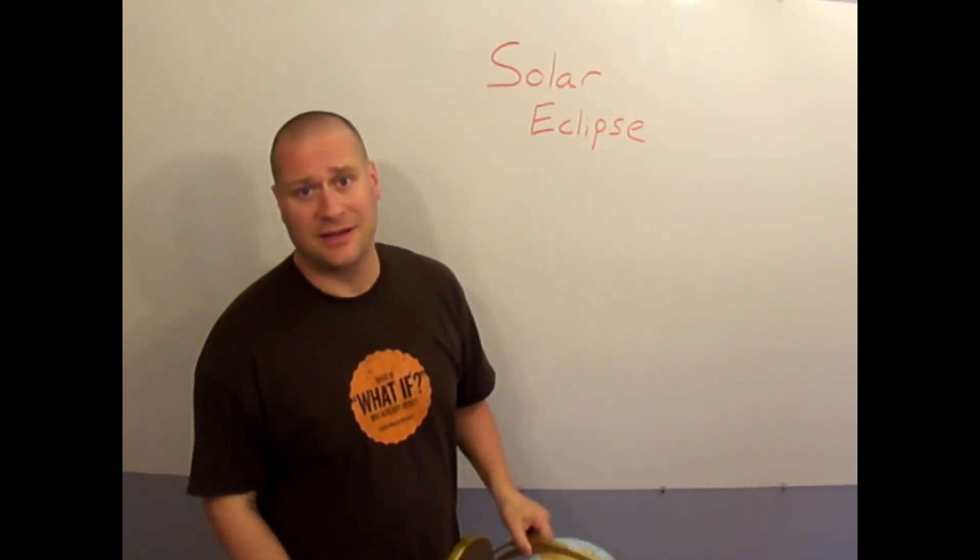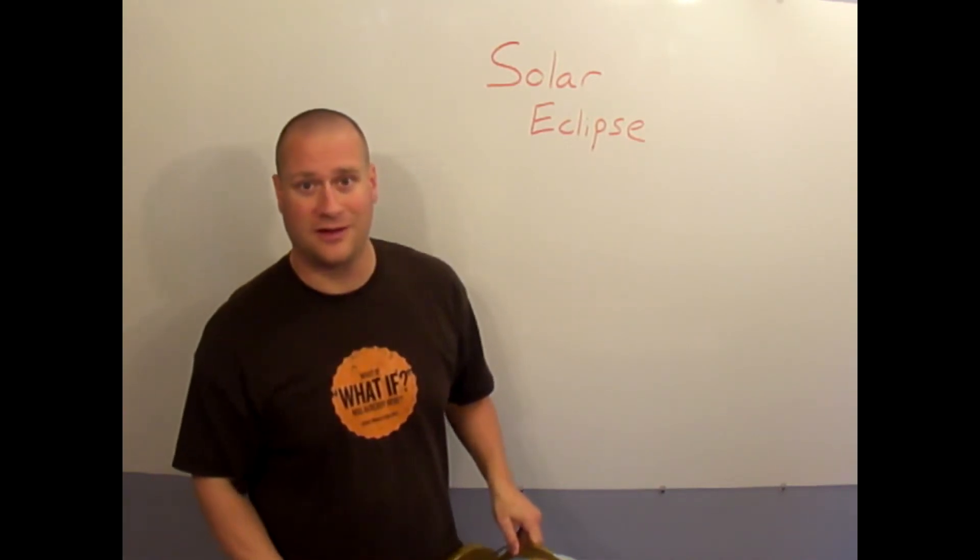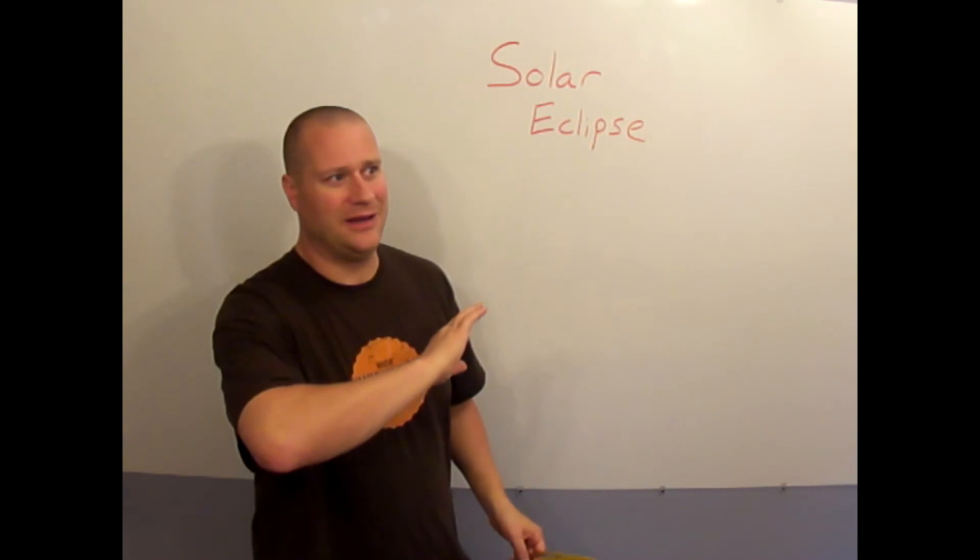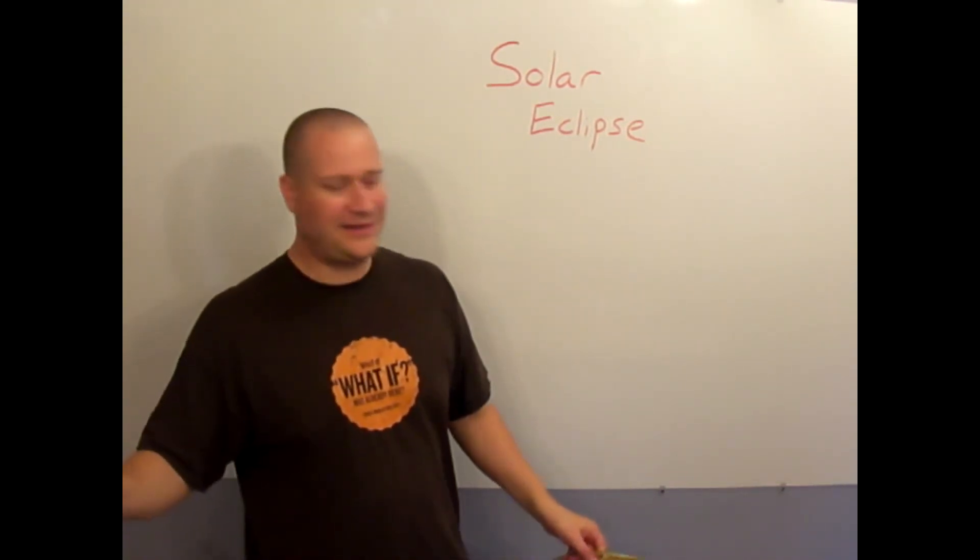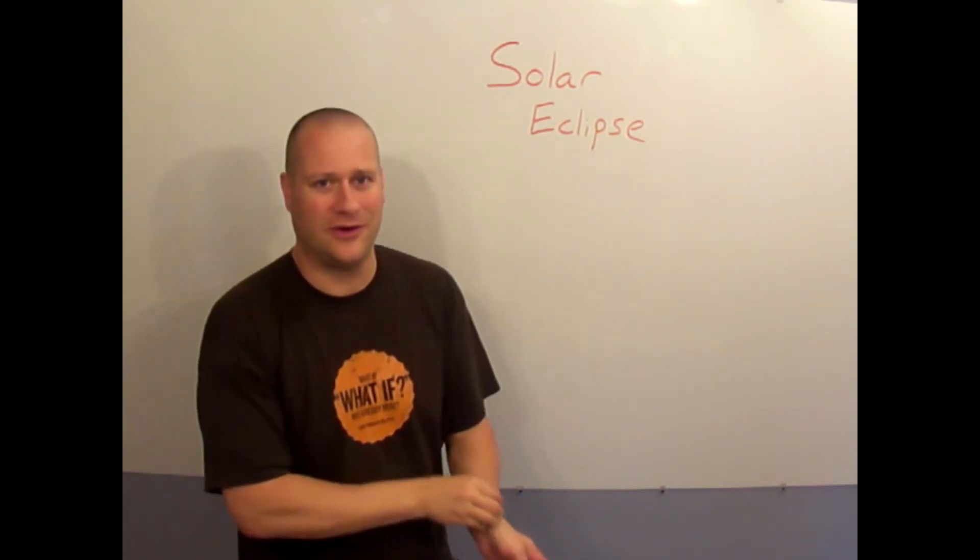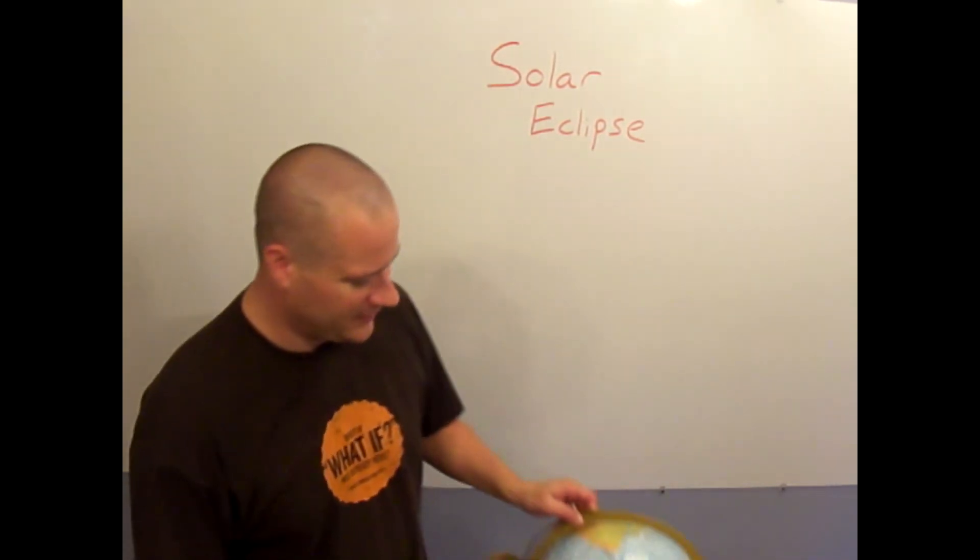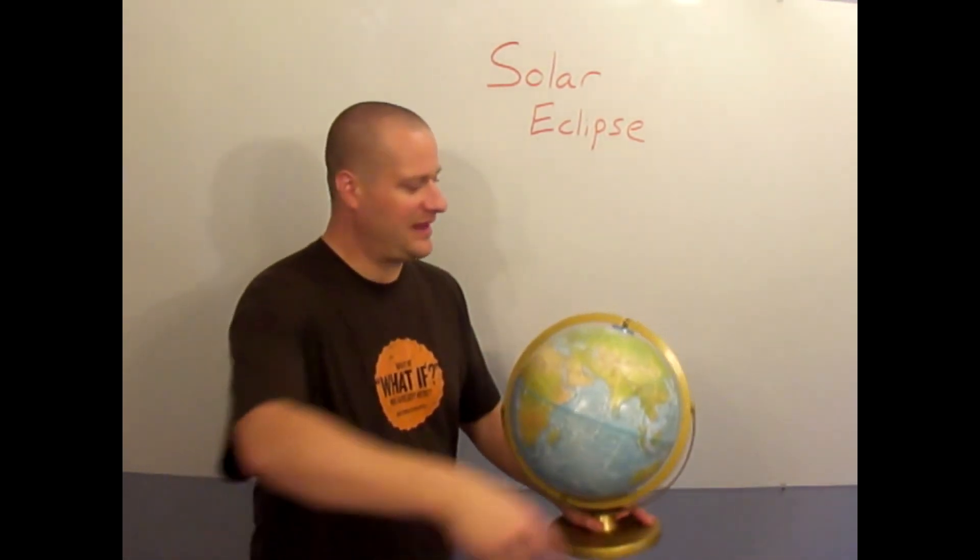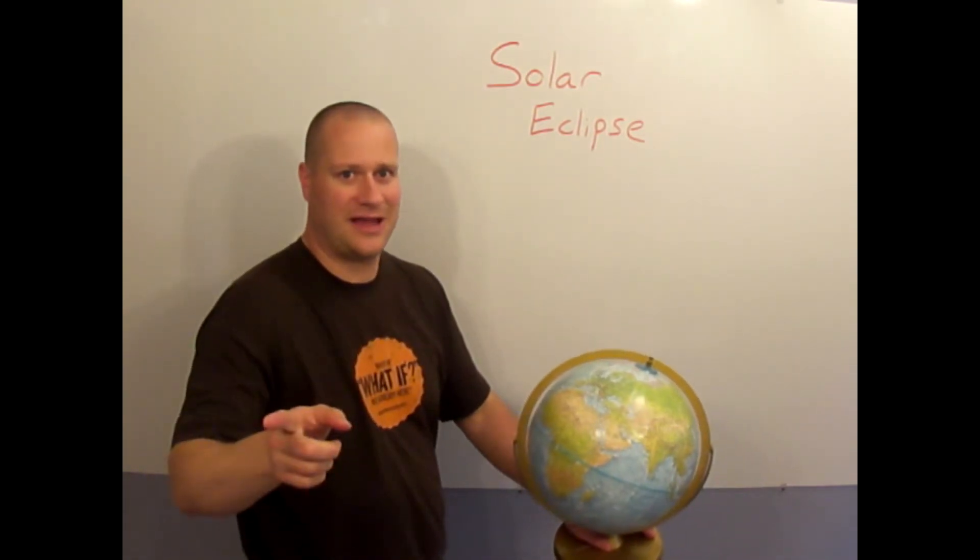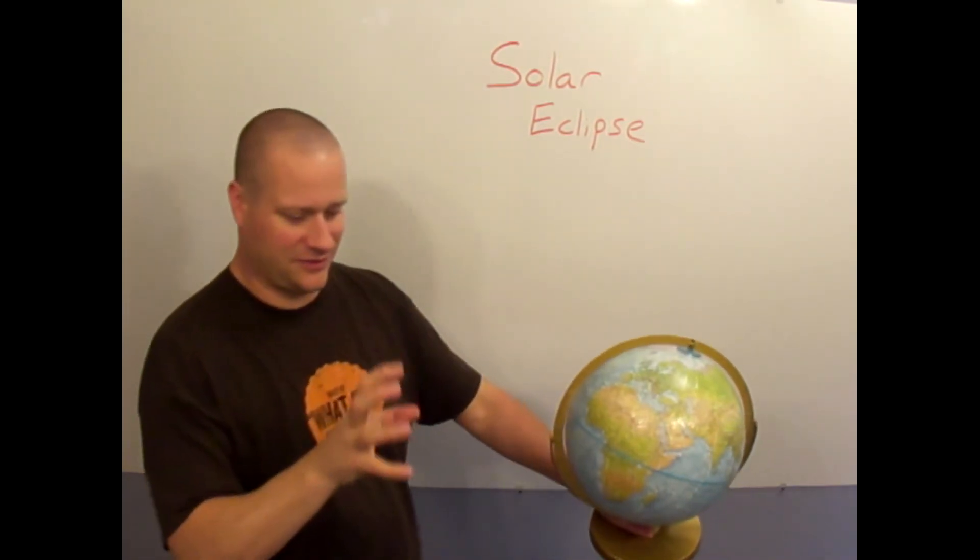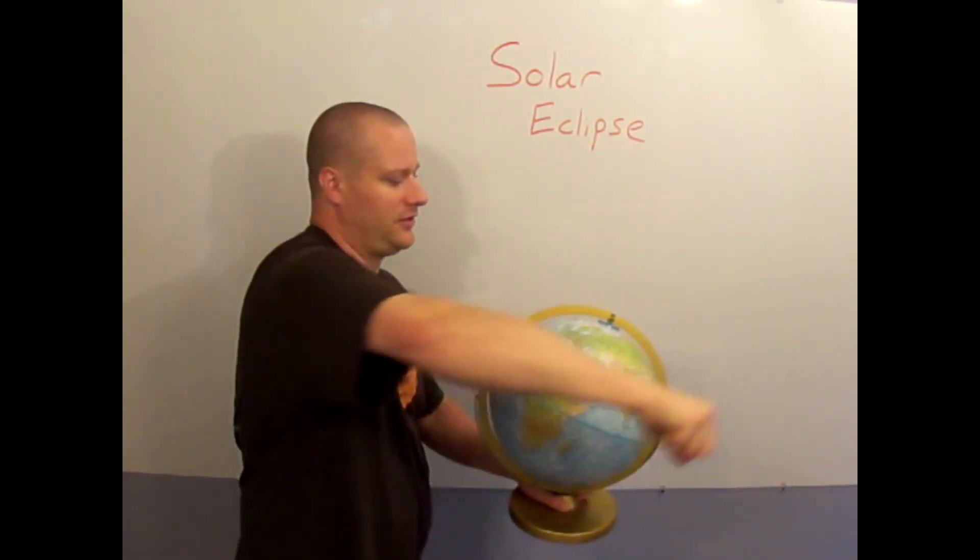The last little phenomenon I want to talk about in our discussion of the sun is called a solar eclipse, and this would basically be when in the broad daylight the sun disappears. What? How does the center of the universe, the biggest thing, the brightest thing in the sky, suddenly disappear? Well there's this phenomenon that happens. What's the satellite that goes around the earth? The natural satellite? The moon, right.